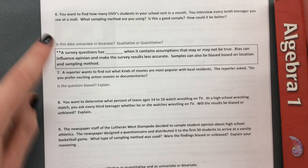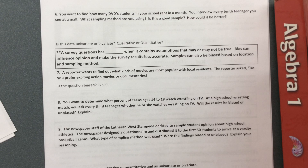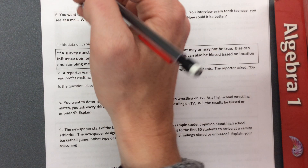Number six: let's say you want to find how many DVDs students in your school rent in a month. You interview every 10th teenager you see at the mall. What sampling method are you using, and is it a good sample? Every 10th teenager — that would be systematic, because systematic means selecting a number and surveying every nth person.